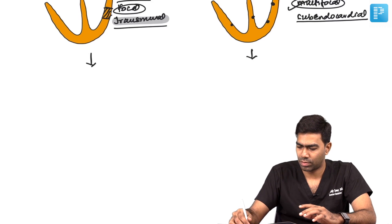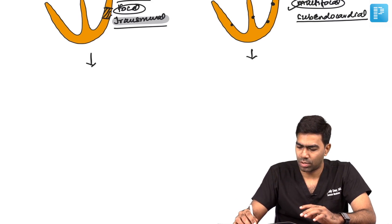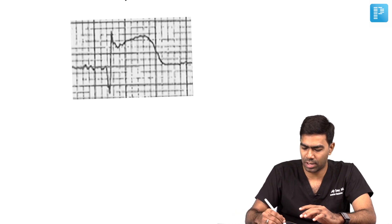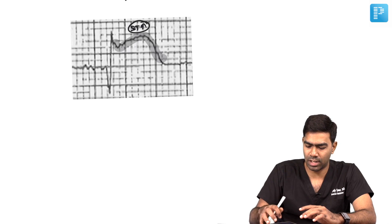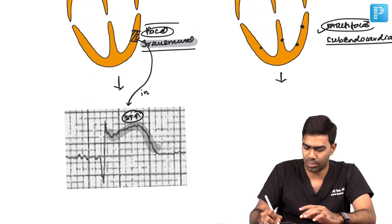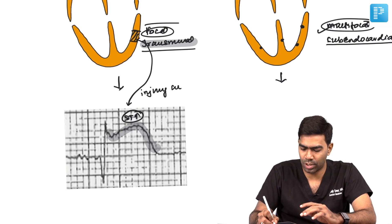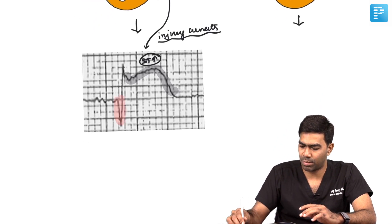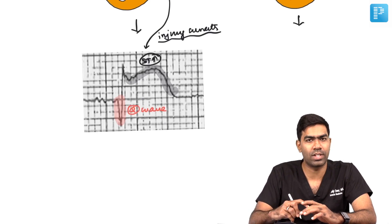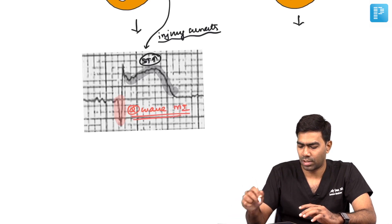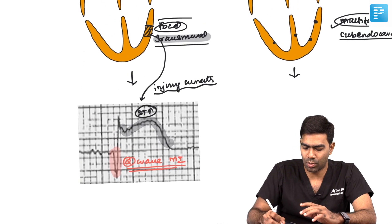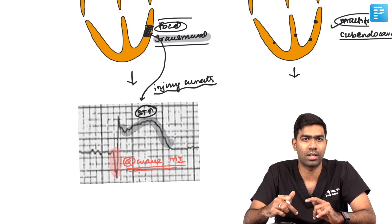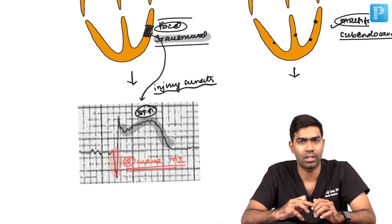What do the ECG findings show? In STACS, you get ST elevation, which results from injury currents produced by the transmurally infarcted myocardium. A significant additional feature is the development of Q waves — that is why STEMI is also called Q wave MI. Q waves develop due to death of myocardium: transmural infarction without death produces only ST elevation, while transmural infarction with death produces Q waves.